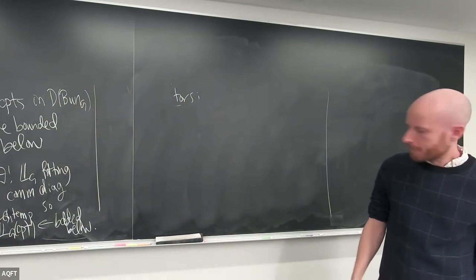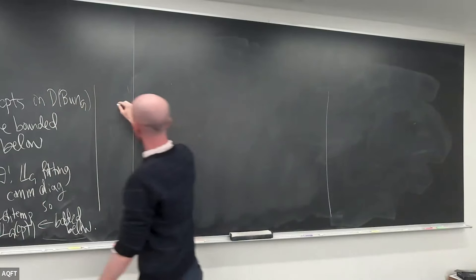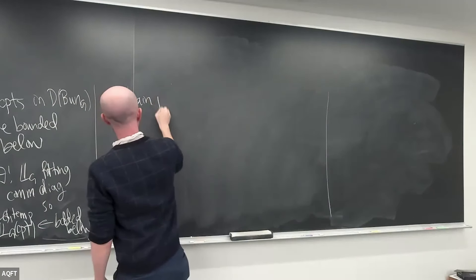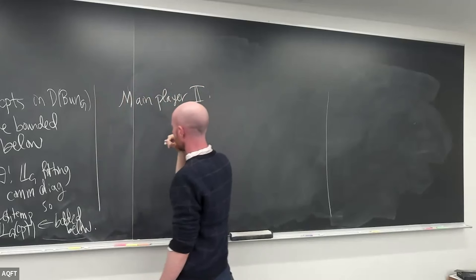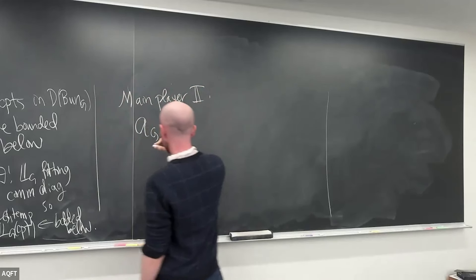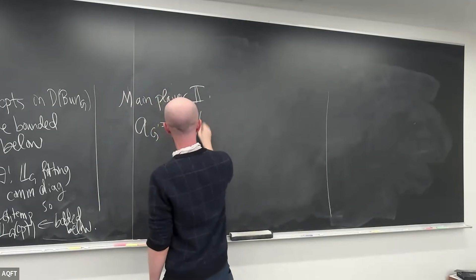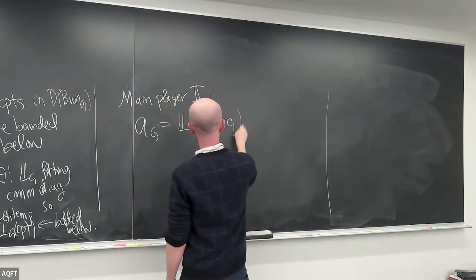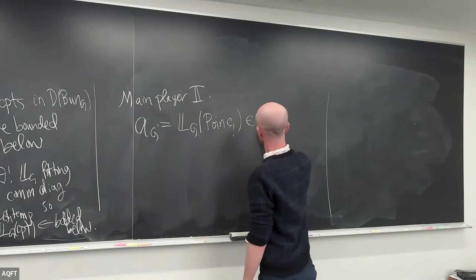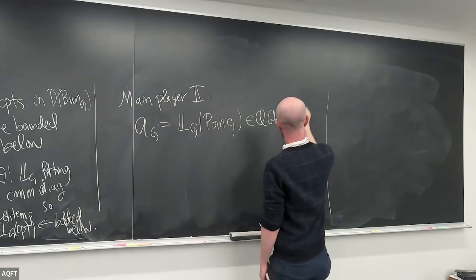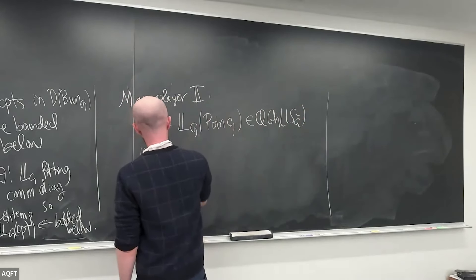The idea was: if you have a modular form, you want to Q-expand it and you shouldn't forget the zeroth term — the Whittaker coefficients are about a_1, a_2, a_3, a_4, and you shouldn't forget a_0. But in fact for categories, you can forget a_0 — you just sort of recover it by doing some homological algebra games. It's a little bit miraculous.